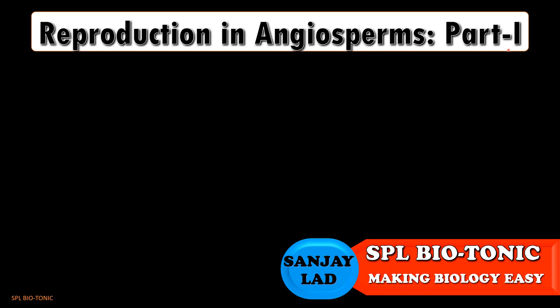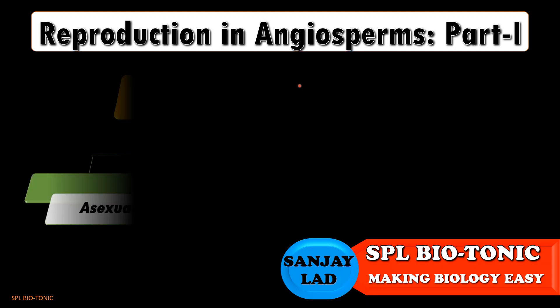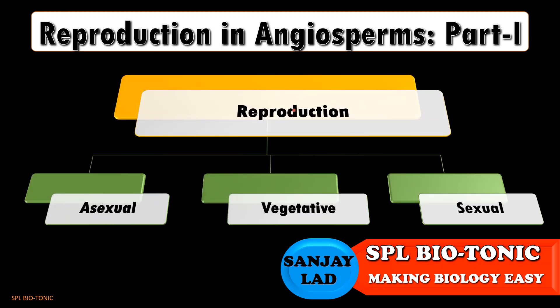If you see the heading of this topic carefully, there are two terms here — one is reproduction and second is angiosperms. As we all know, there are three types of reproduction: asexual, vegetative, and sexual. In this session, we will be mainly focusing on sexual reproduction.